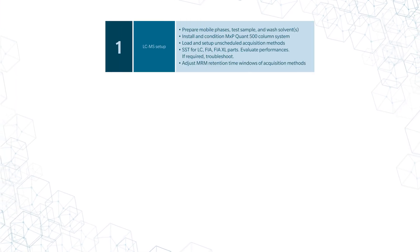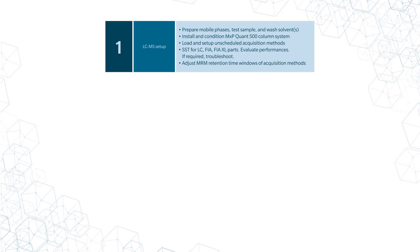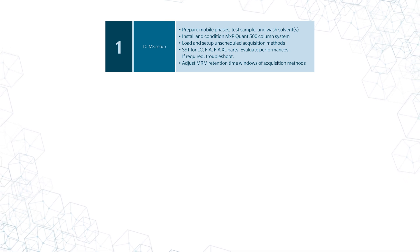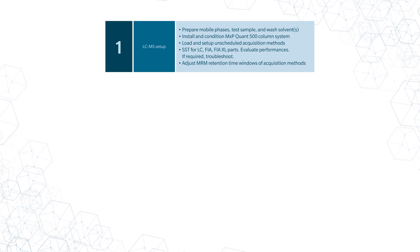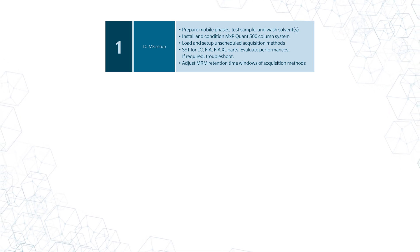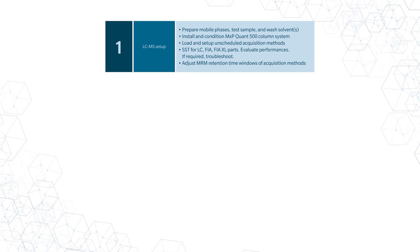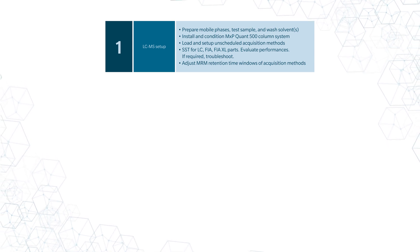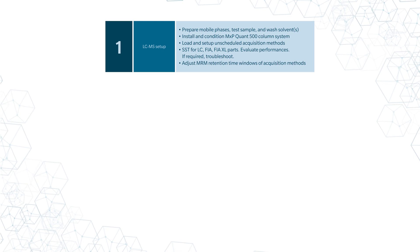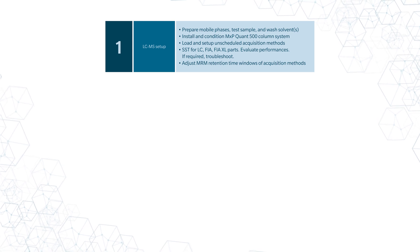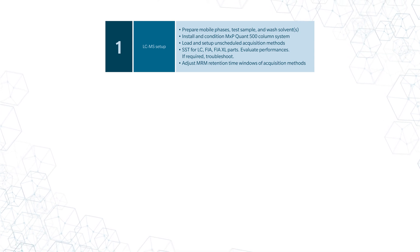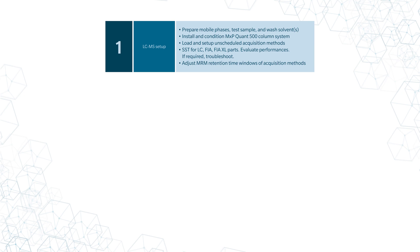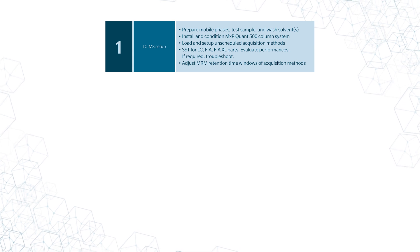Before starting with the kit preparation, prepare and install all mobile phases and wash solvents. Purge the solvent lines, then install and condition the MXP Quant 500 column system. Prepare the LC, FIA, and XL test samples in blanks and run with their respective acquisition methods. If this is the first-time kit setup, run the LC test samples using wider MRM collection windows to determine metabolite retention times. Then update these times in the final acquisition methods. Evaluate the performance of all the test samples and then perform troubleshooting if required.